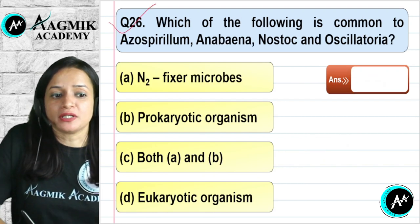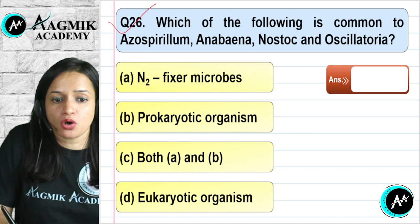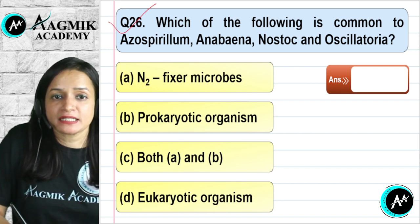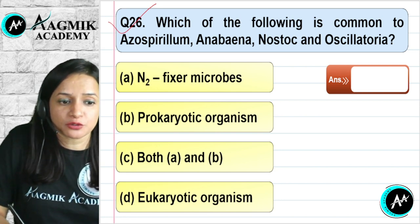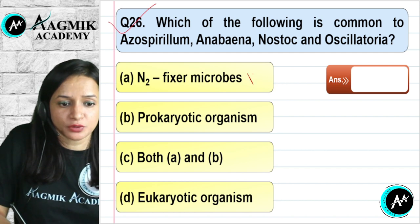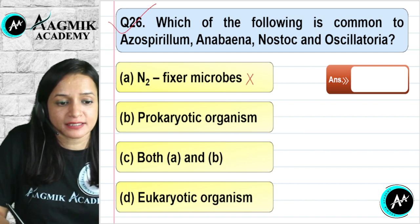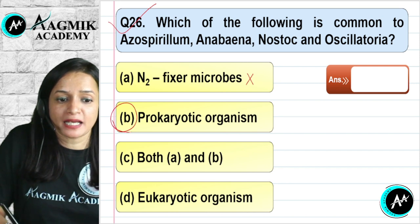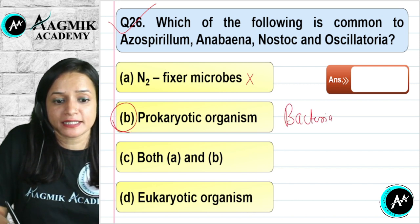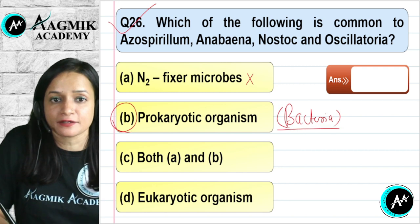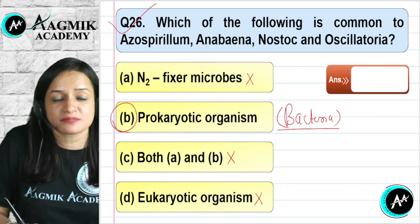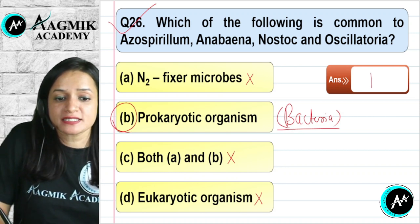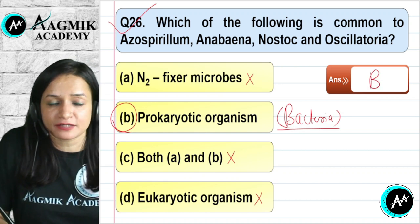Question number 26: What is common to Azospirillum, Anabaena, Nostoc, and Oscillatoria? Not all are nitrogen fixers — Oscillatoria does not fix nitrogen. All four belong to Kingdom Monera, meaning they are all prokaryotic organisms. Option C is not applicable, and option D (eukaryotic) is wrong since bacteria are prokaryotes. The correct option is B — prokaryotic organism.